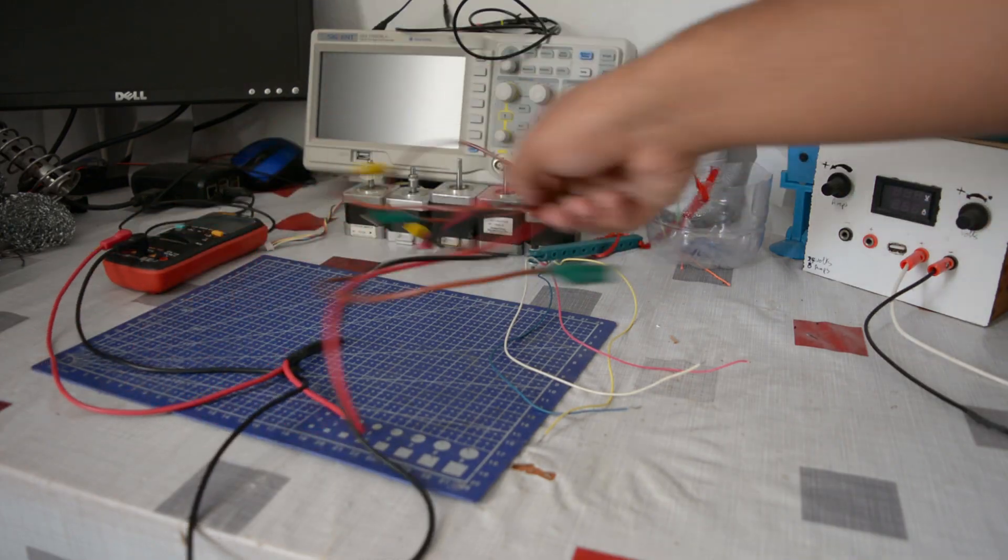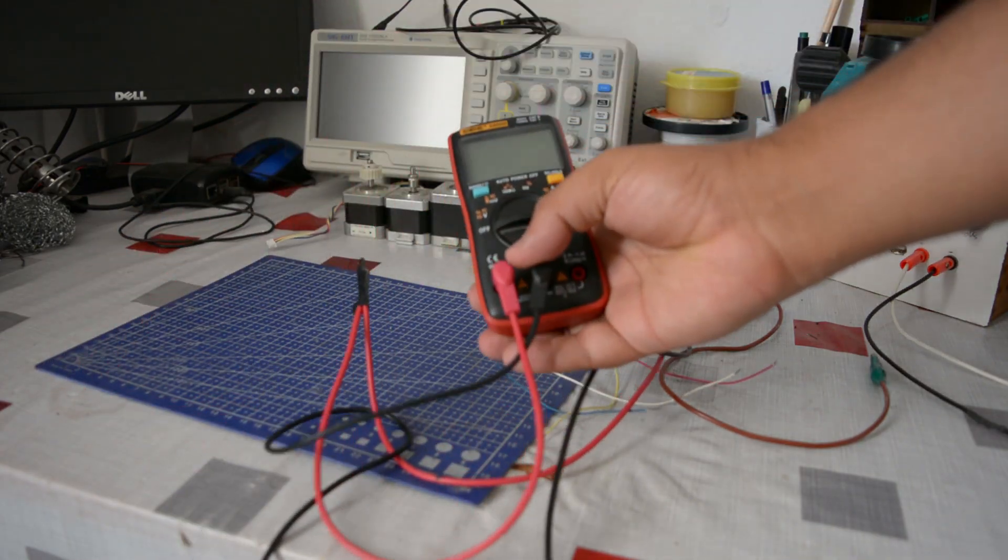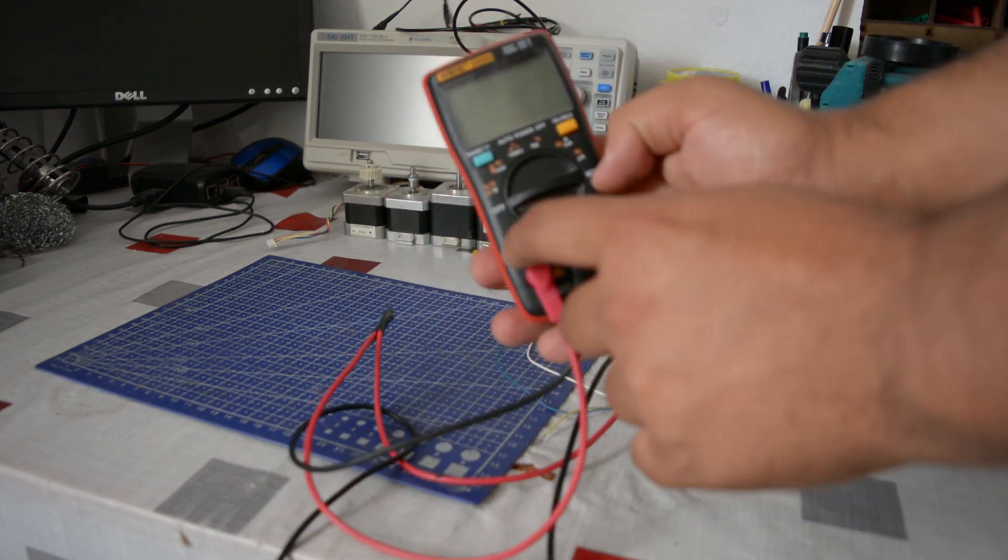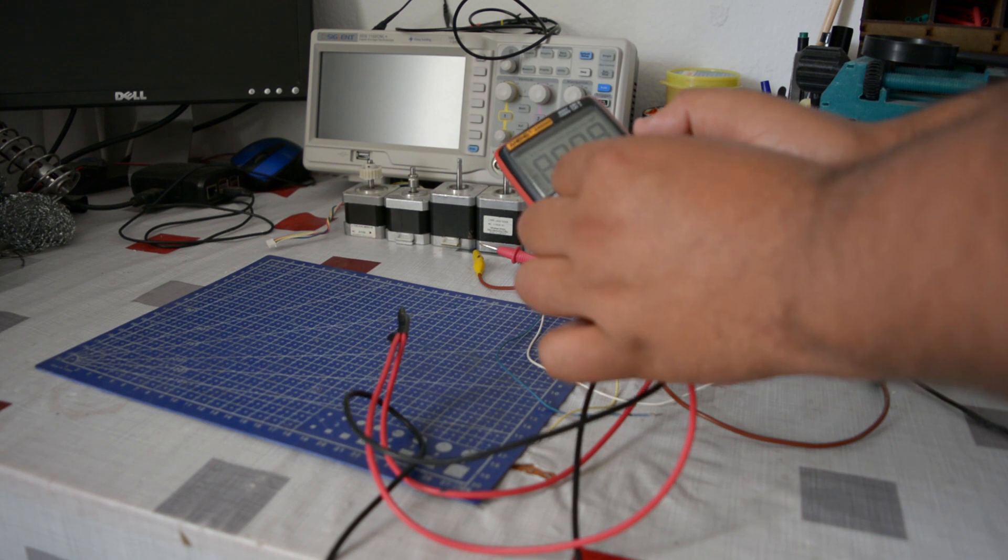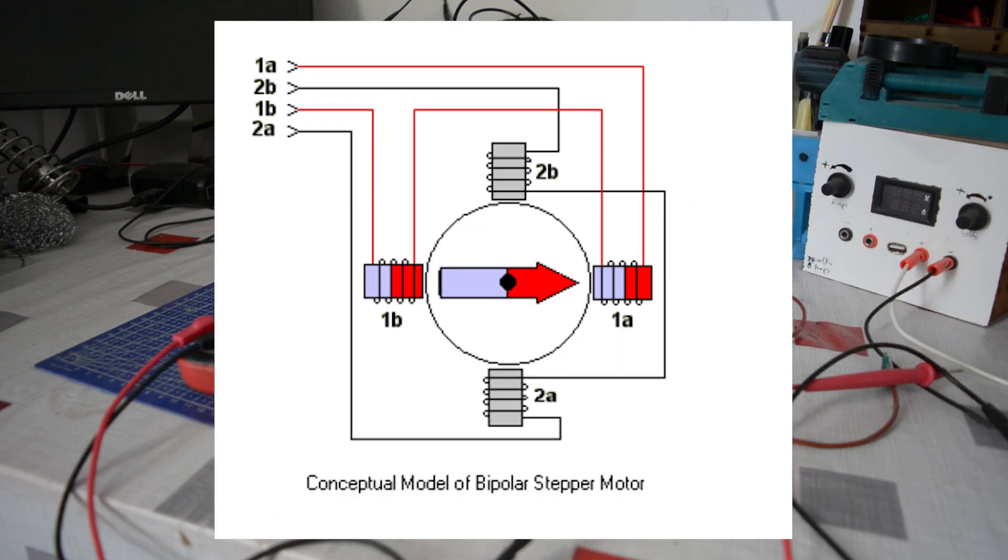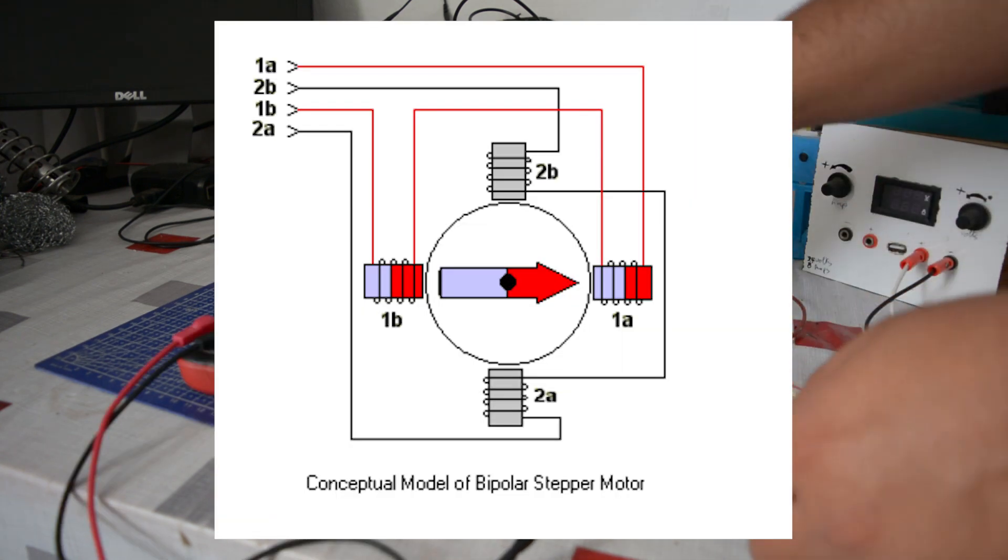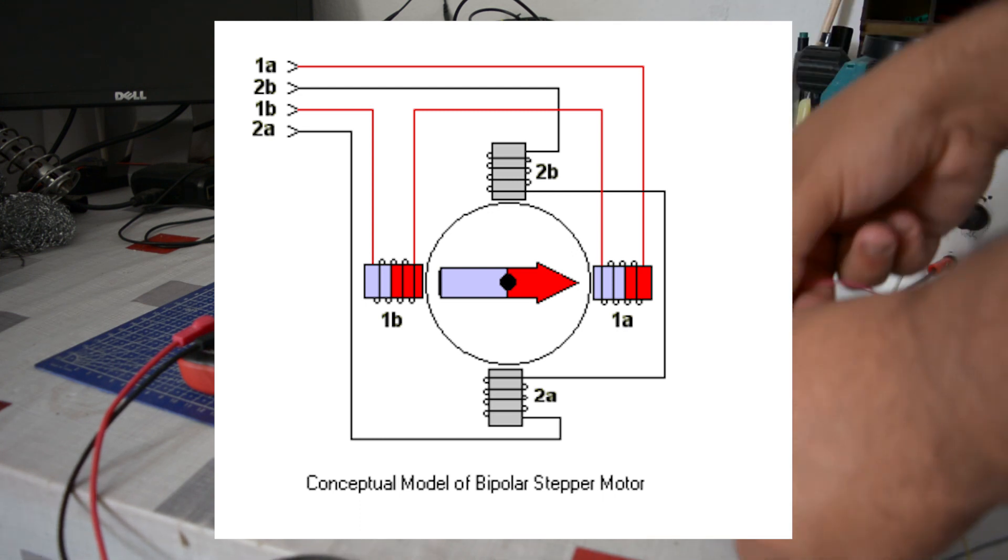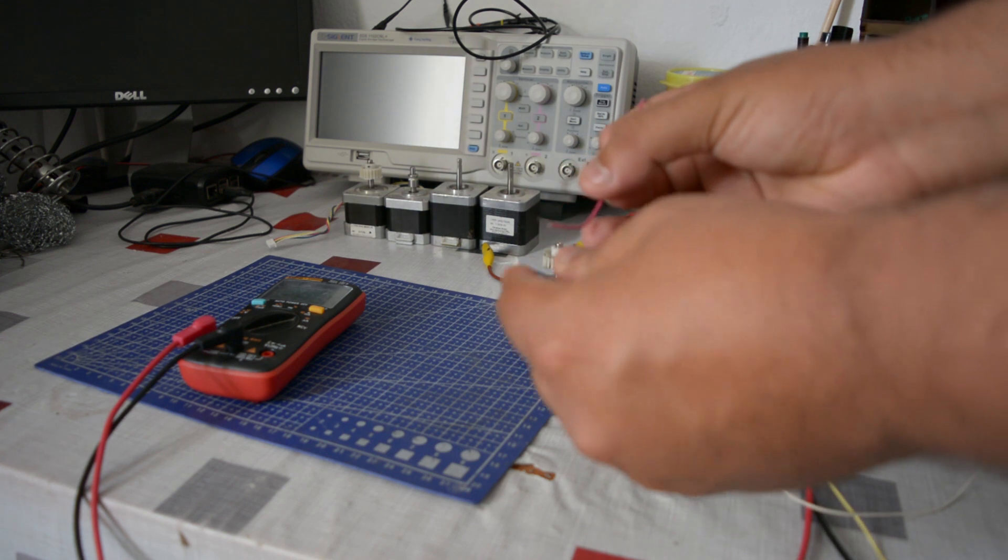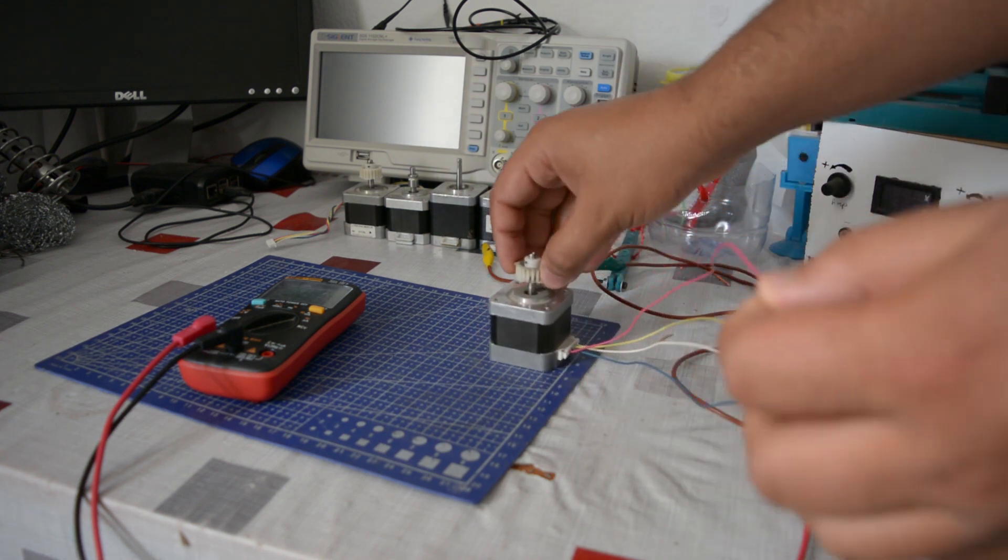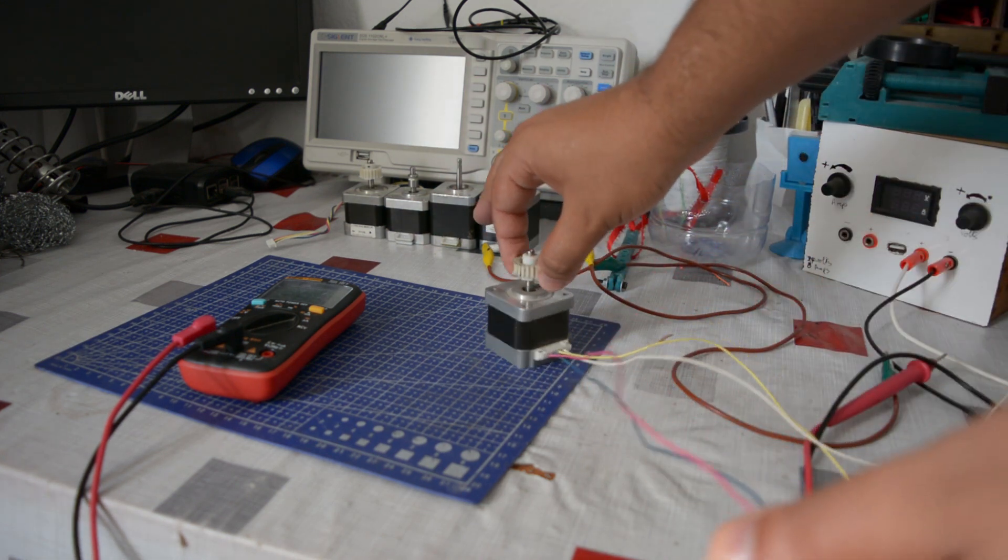I'll be putting my multimeter on the amps measuring function to set up exactly 1.7 amps. First, we need to figure out the coil wires. You see, this is a bipolar stepper motor that has 2 coils inside of it. Each coil has 2 terminals, so it has 2 wires. So in total we have 2 coils and 4 wires. Now we need to identify which of the wires belongs to which coil.